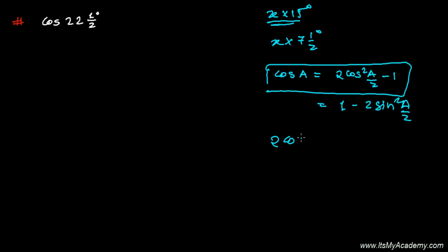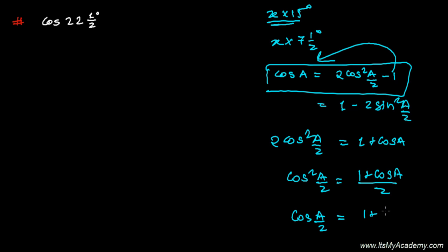Here I can write 2 cos squared A by 2 equals to 1 plus cos A. I didn't do anything, I just shifted this minus 1 into another side. And now I can write cos squared A over 2 as 1 plus cos A divided by 2. So cosine squared A by 2 will be now 1 plus cosine A over 2 inside the root.